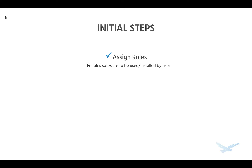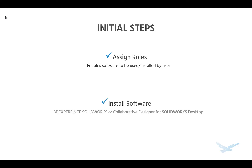Next, we're going to assign roles. It's a simple process to assign roles to users so they can use the software. And then the last step — we'll install the software. In this video, I'm going to install 3DEXPERIENCE SOLIDWORKS, but I'll also talk about how to install Collaborative Designer for SOLIDWORKS desktop, which is a very similar process.